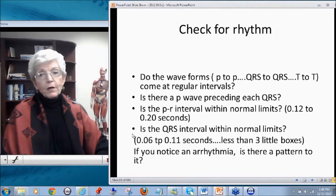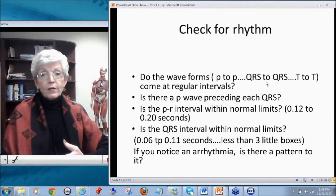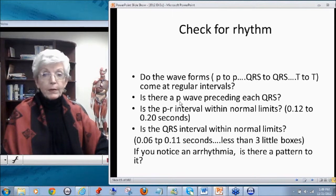So you also want to look for the rhythm. So to do this, you would measure your PP intervals, your QRS to QRS intervals, and your T to T. And you decide, do they come at regular intervals, or is there an irregularity to that pattern? You want to look at your P waves. Is there a P wave that precedes each QRS? Or do some complexes have a P wave and others don't seem to have one?